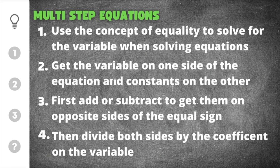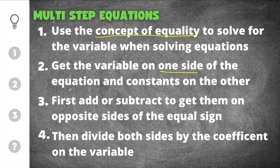We have three important things we need to remember when solving multi-step equations. The first is that you have to use the concept of equality to solve for the variable — whatever you do to one side you also have to do to the other. That means you're going to get the variable on one side of the equation and constants on the other. A variable just means a letter, like x or y, and a constant is any number without a variable.